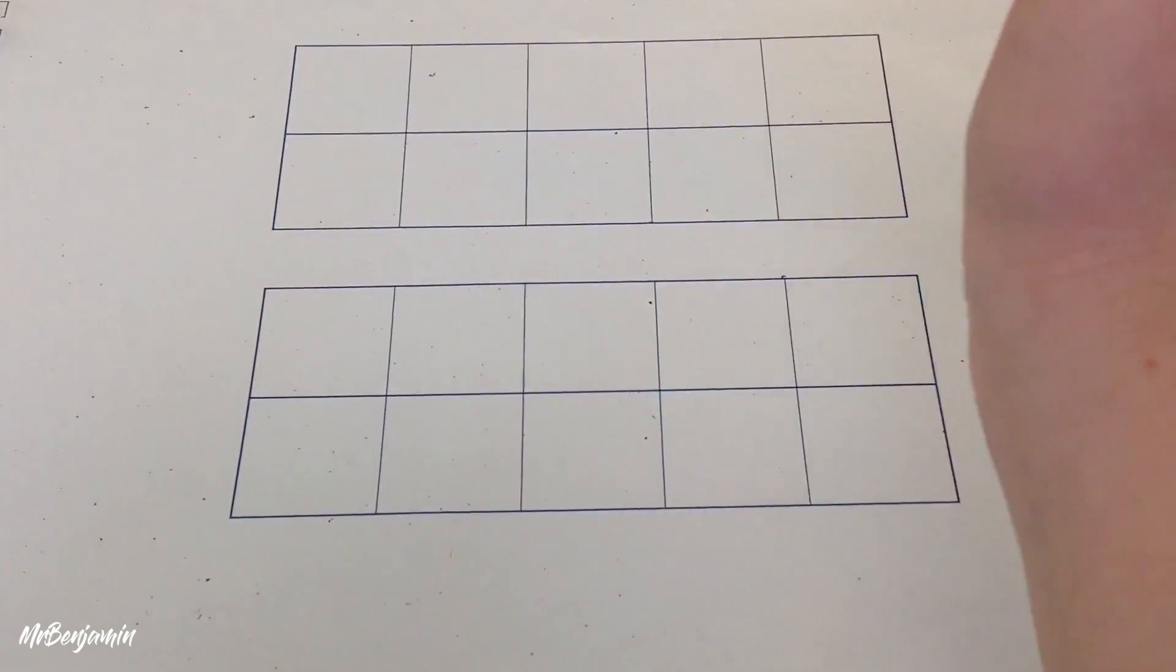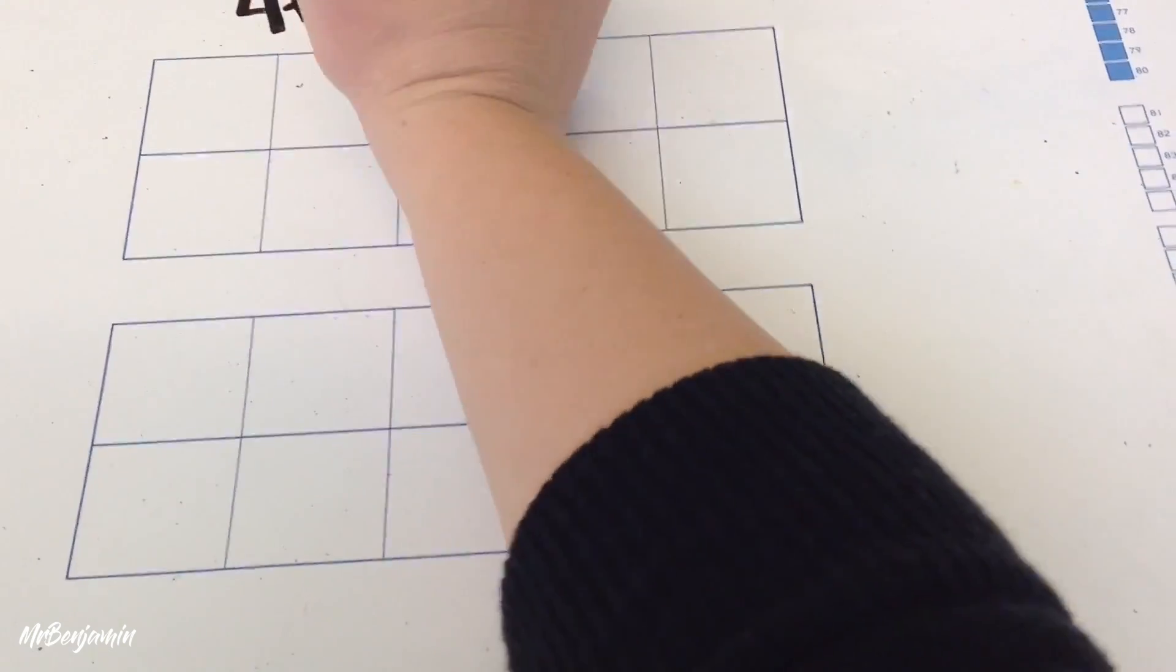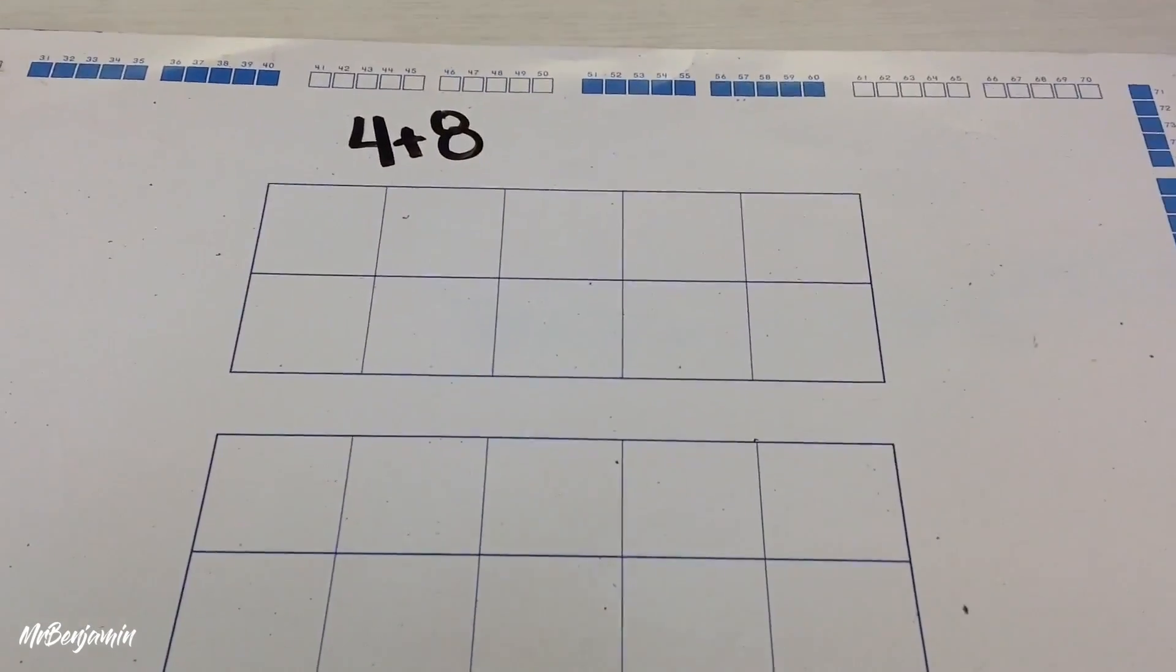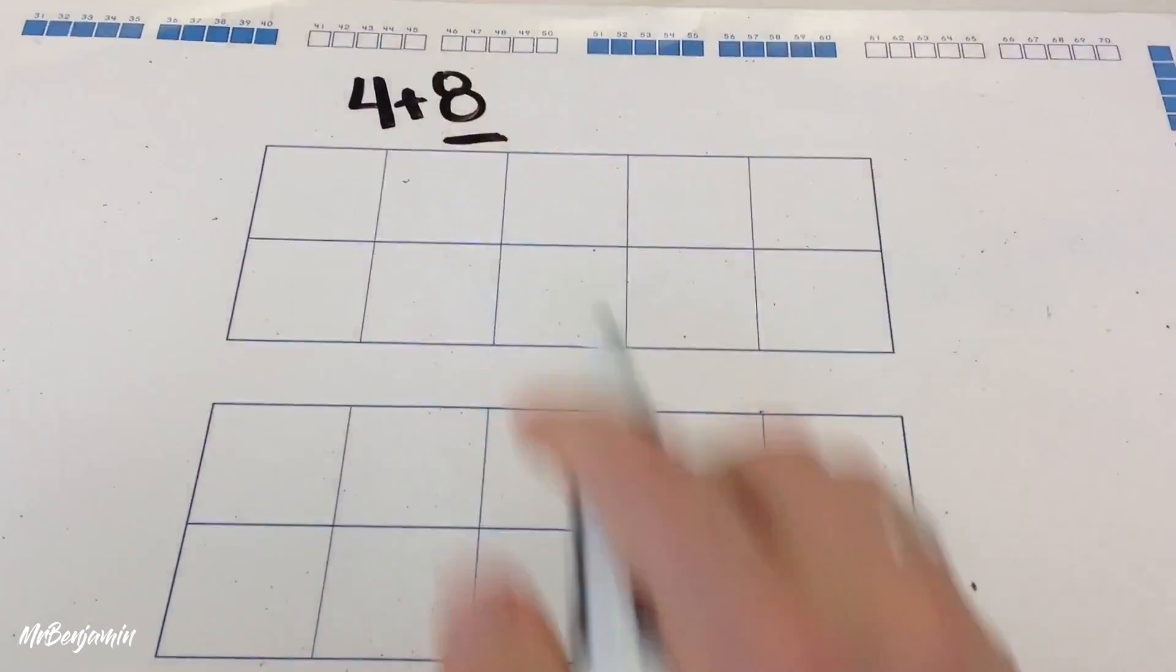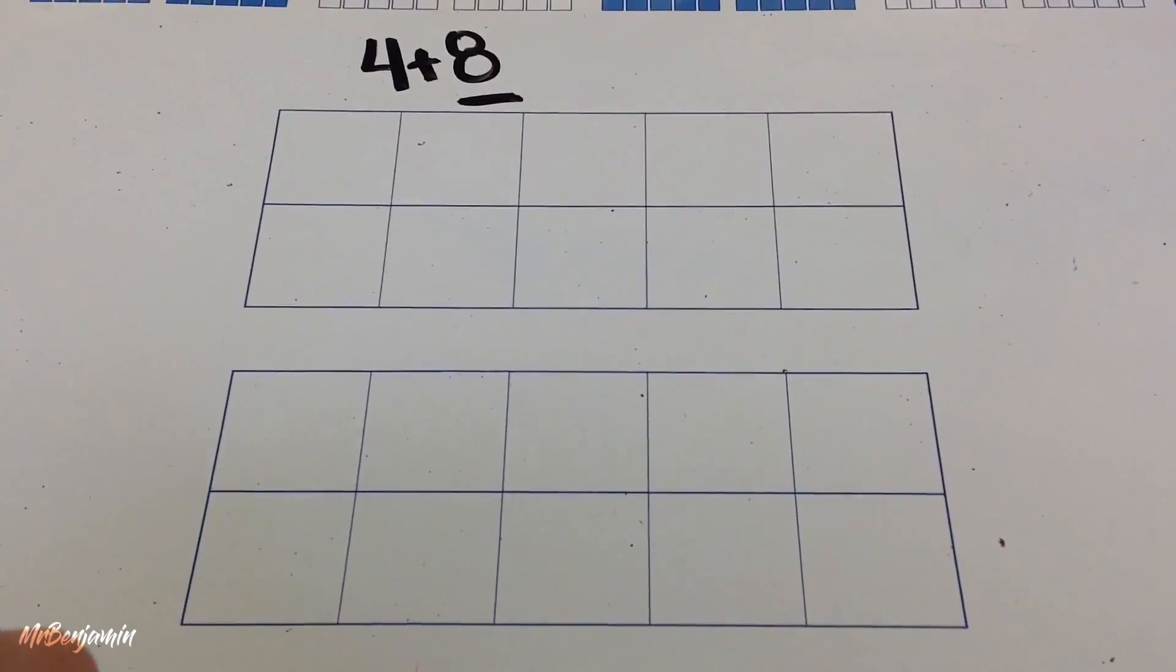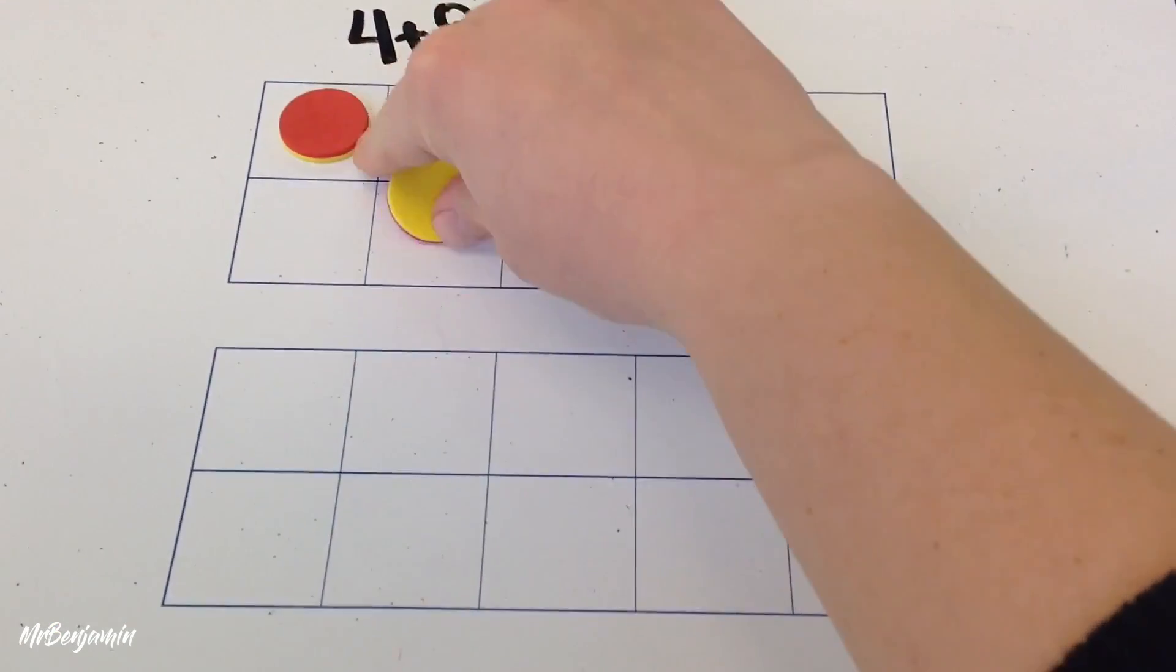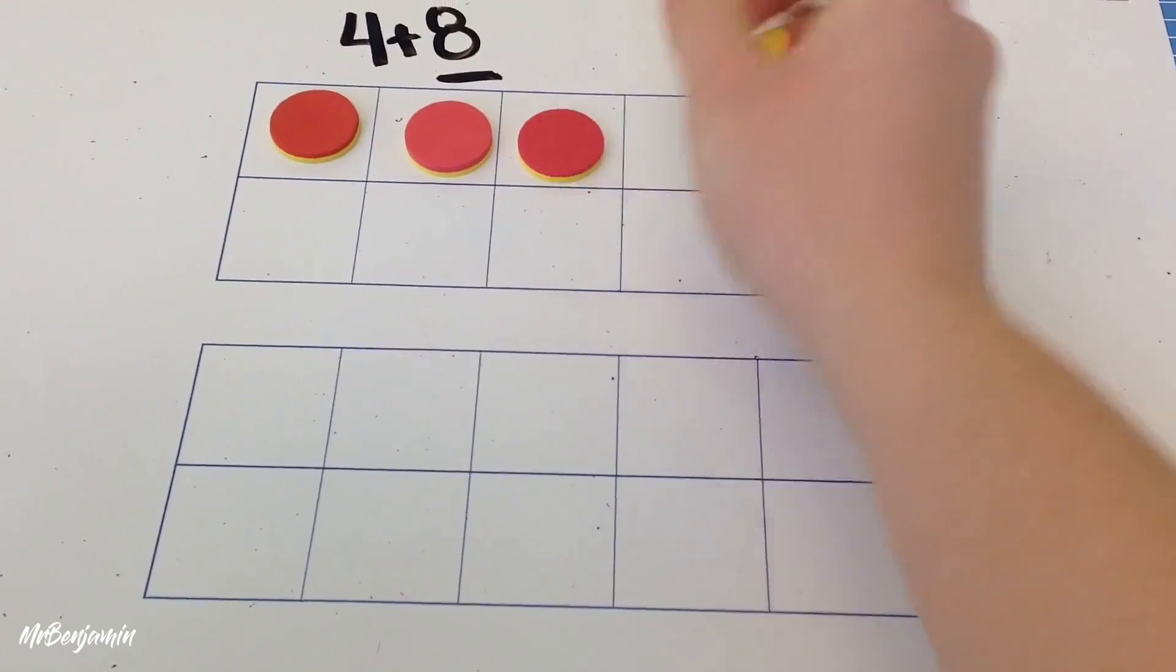So first, let's say we have the equation 4 plus 8. They take the greater number and they put it in a tens frame. So here we have two tens frames and we are using red and yellow colored counters. They use one color to show the greater number.